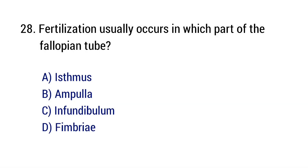Question number 28. Fertilization usually occurs in which part of the fallopian tube? The right answer is option B: Ampulla.